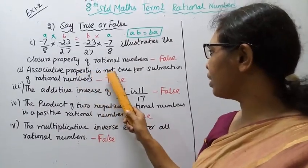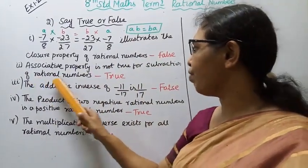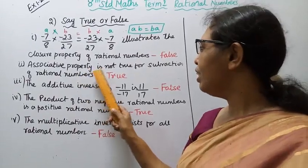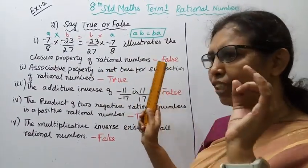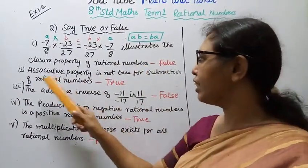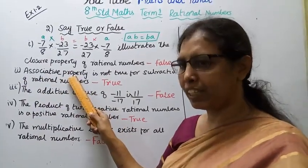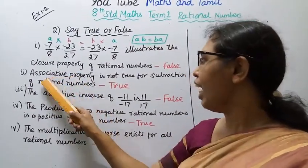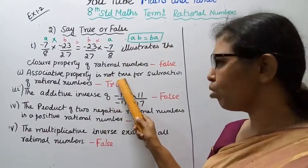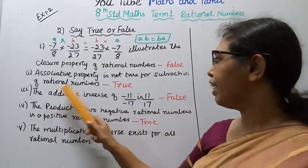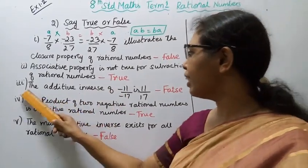Second: Associative Property is not true for subtraction of rational numbers. For subtraction and division, Associative Property does not hold. So this statement is True - Associative Property is indeed not true for subtraction of rational numbers.